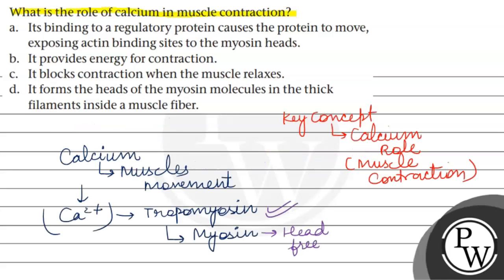So the right answer to this question is A — it binds to a regulatory protein, causes the protein to move, exposing actin binding sites to the myosin heads. I hope you understood well. Best of luck and thank you.